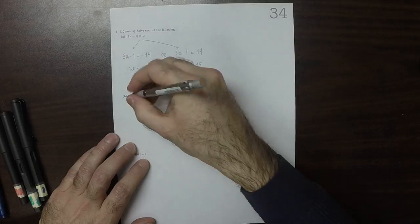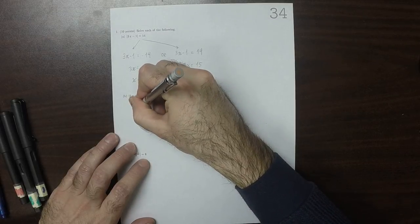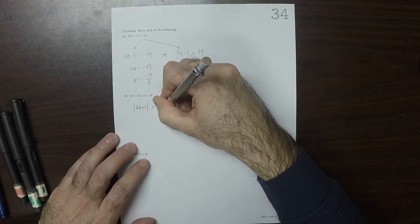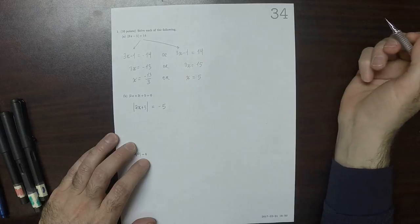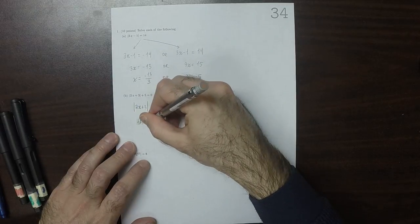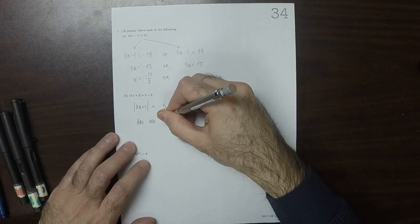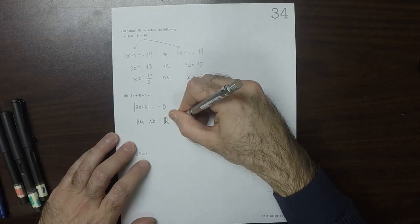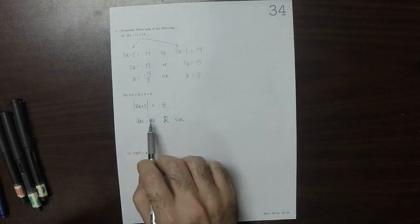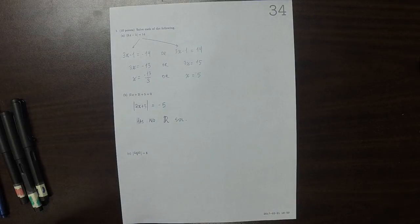Okay, this equation, 2x plus 3, is equal negative 5. That's moving the 5 to the other side. Well, this has no solution because there's nothing that you can put into the absolute value so that negative 5 will come out.